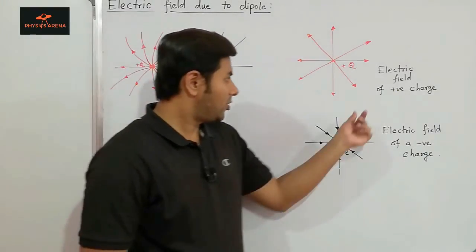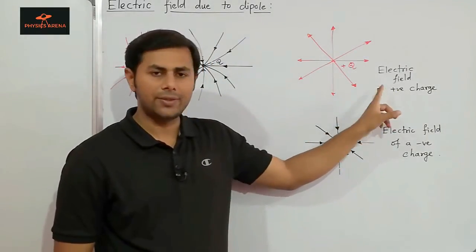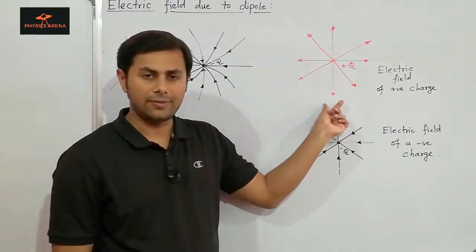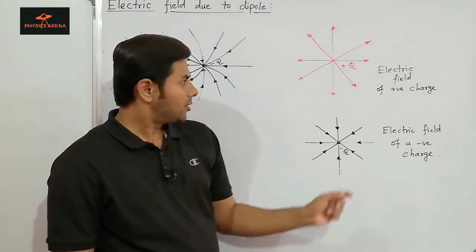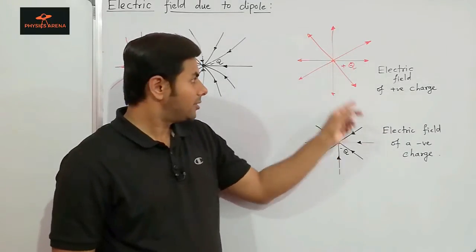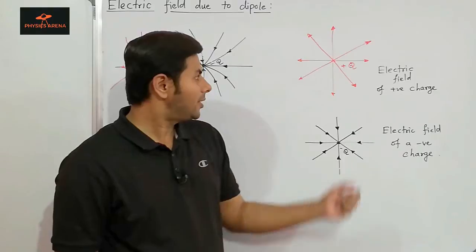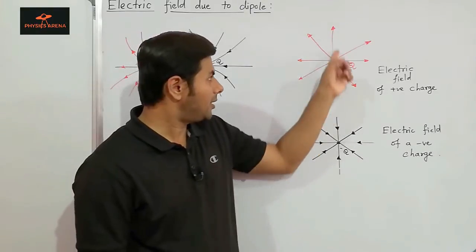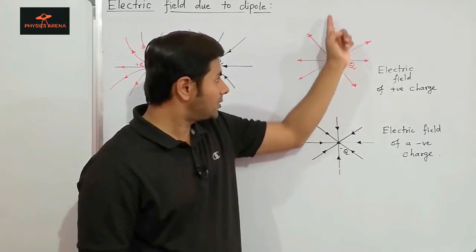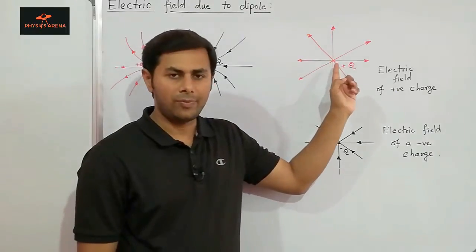We already know that the electric field due to a positive charge looks like this. If this is a positive charge kept at this point, then the electric field is shown by the electric field lines which are radially outwards from the position of the positive charge.